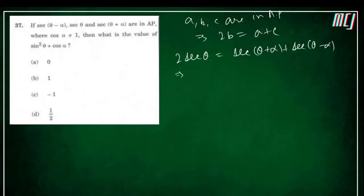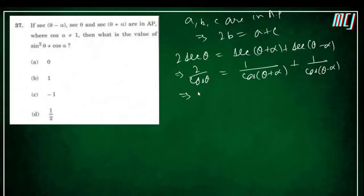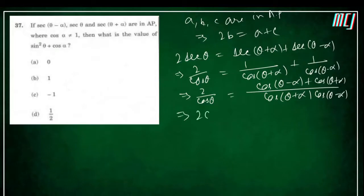Converting to cosines: 2/cosθ = 1/cos(θ + α) + 1/cos(θ − α). Taking LCM on the right side: 2/cosθ = [cos(θ − α) + cos(θ + α)] / [cos(θ + α)·cos(θ − α)].